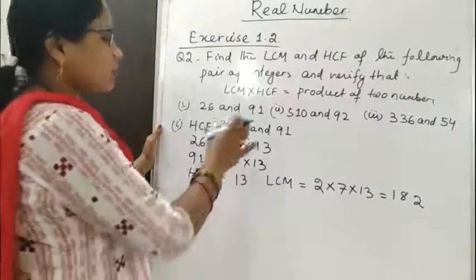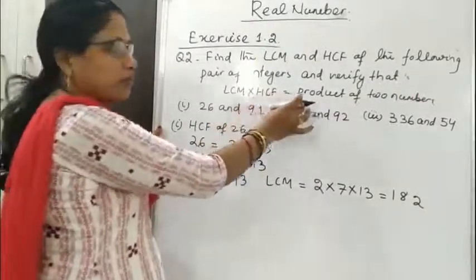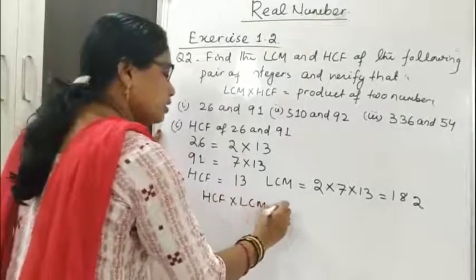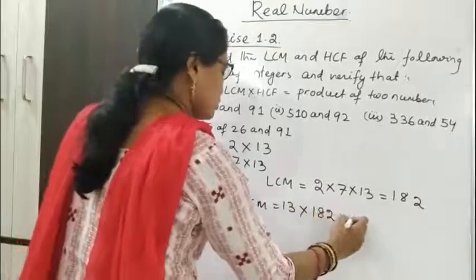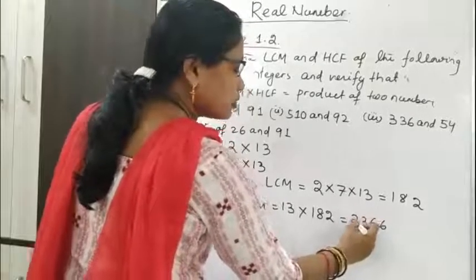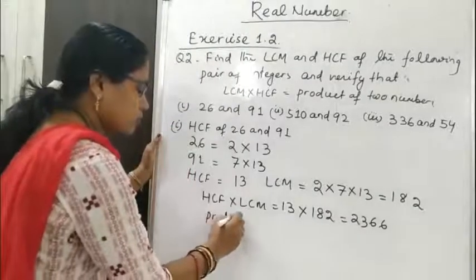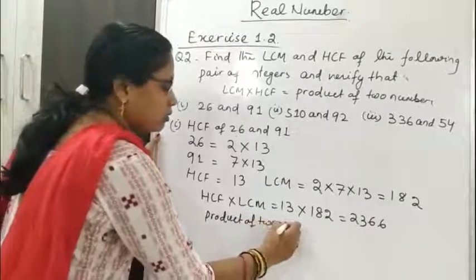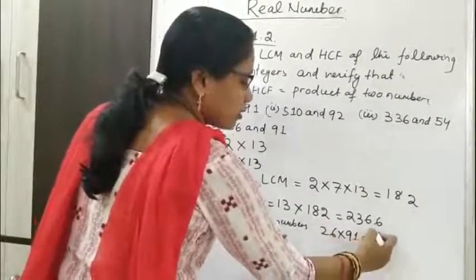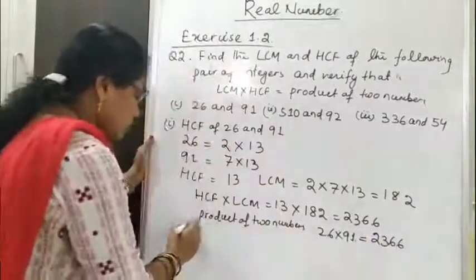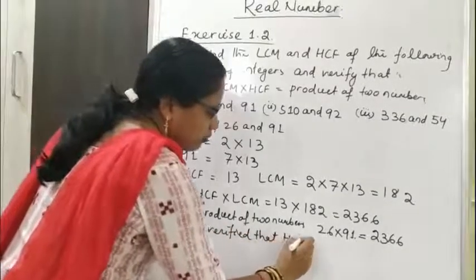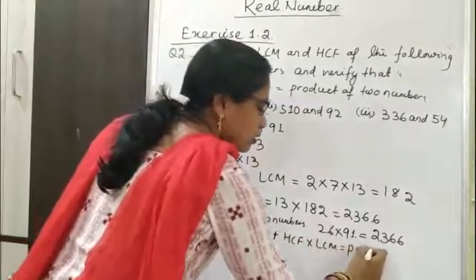Now to verify: HCF × LCM = 13 × 182 = 2366. And the product of the two numbers: 26 × 91 = 2366. So it is verified that HCF × LCM equals the product of the two numbers.